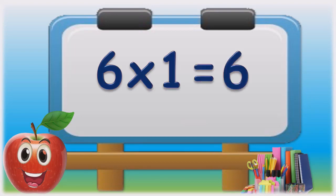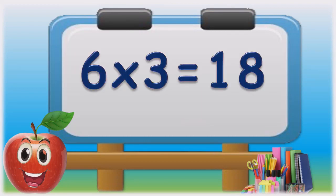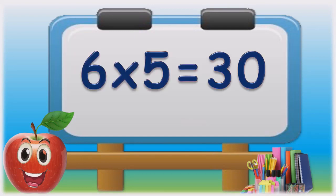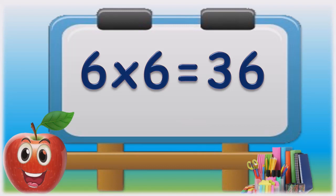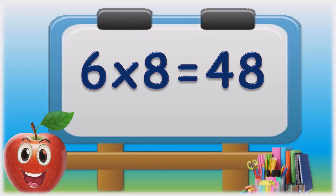Six ones are six. Six twos are twelve. Six threes are eighteen. Six fours are twenty-four. Six fives are thirty. Six sixes are thirty-six. Six sevens are forty-two. Six eights are forty-eight.